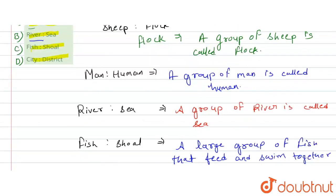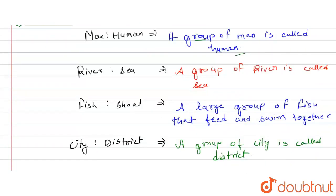In these four, we have given man-human. The group of man is called human. River and sea: the group of river is called sea.